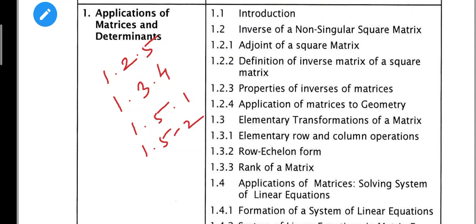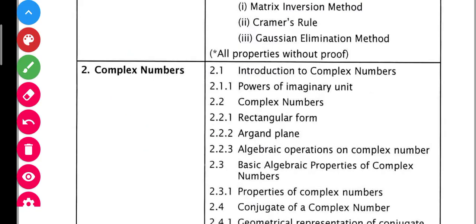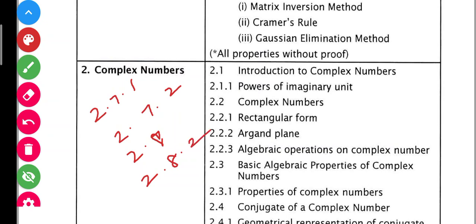This heading is the same thing. We will talk about theorem here. So we will talk about sum number 1, 2.7.1, 2.7.2, 2.8, and then 2.8.2. In the heading it is the same theorem. This is about the 2nd chapter.